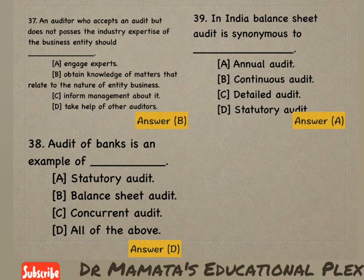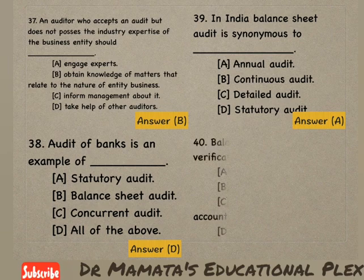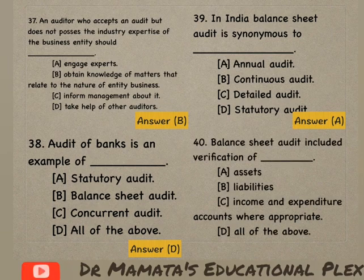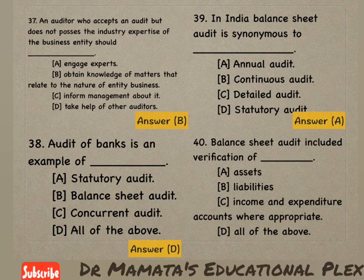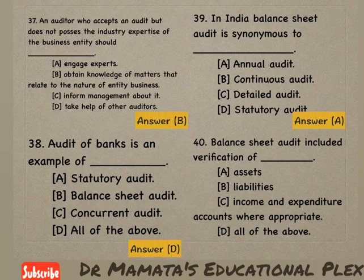So option A is the correct answer. Next: Balance sheet audit includes verification of — assets, liabilities, income and expenditure accounts where appropriate, or all of the above.